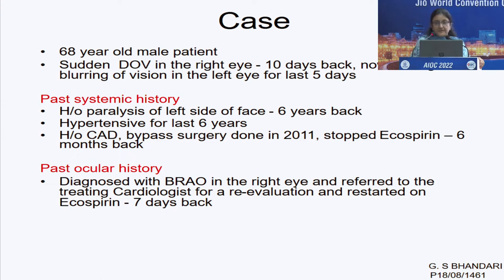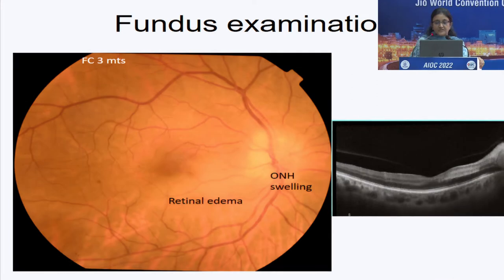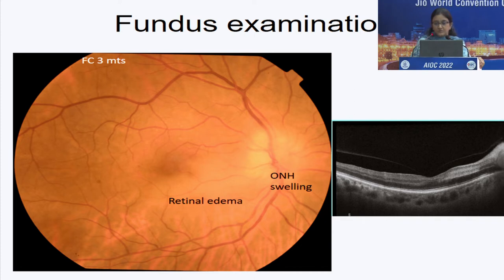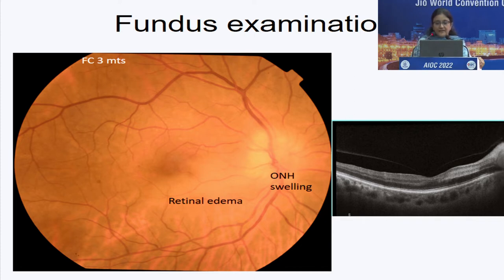He stopped ecosprin on his own six months back. He had been diagnosed as a branch retinal artery occlusion in the right eye somewhere else and was referred. If you see the right eye, the vision was as low as finger counting at three meters, with ONH swelling and retinal edema — no doubt we were dealing with a BRAO in the right eye.